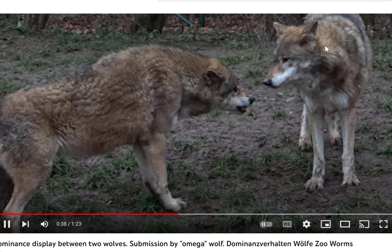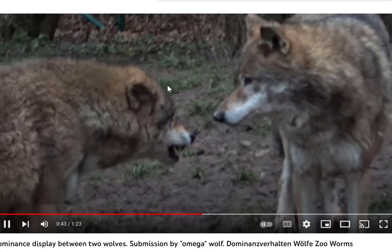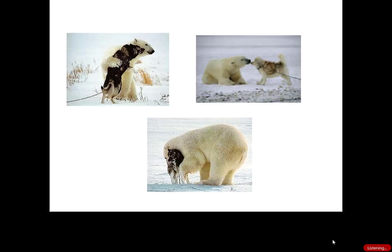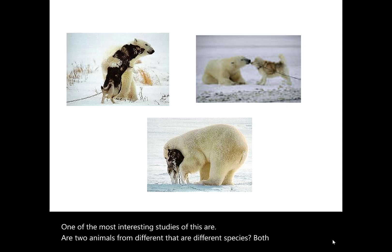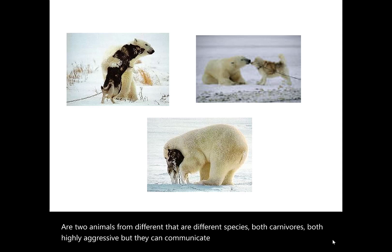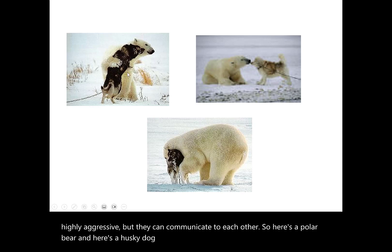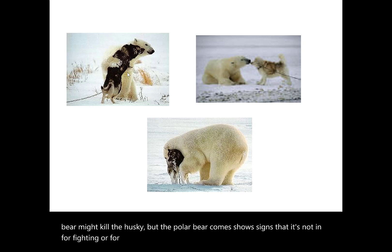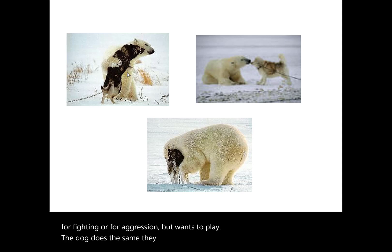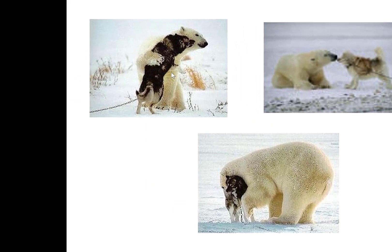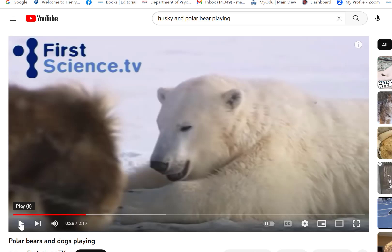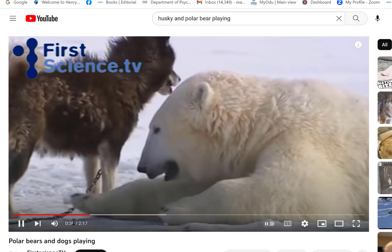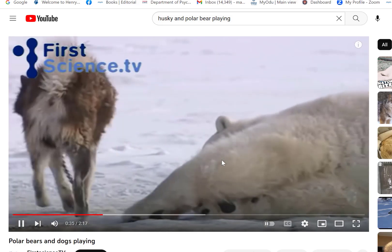Facial expressions serve as communications of emotional states. One of the most interesting examples involves a polar bear and a husky dog — two different species, both carnivores, both highly aggressive. The polar bear shows signs that it's not interested in aggression but wants to play, the dog does the same, and they communicate their emotional states to each other: 'I don't want to fight, I want to play.' Play is a very important emotional state that both animals want to experience.